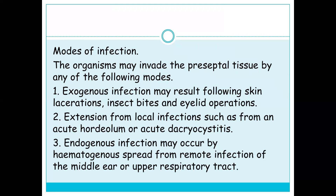The organism may invade the preseptal tissue by any of the following modes. First, exogenous infection may result following skin lacerations, insect bites, and eyelid operations. Second, extension from local infections such as from an acute hordeolum — commonly called a stye, which is basically an acute localized swelling of the eyelid that may be external or internal and is usually a pyogenic infection.